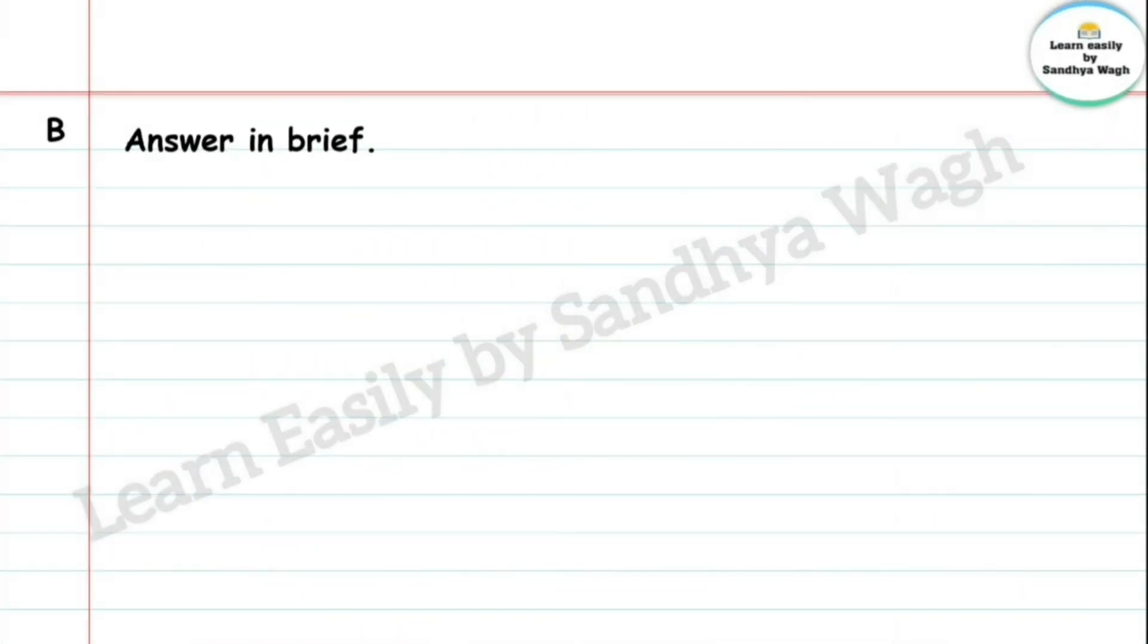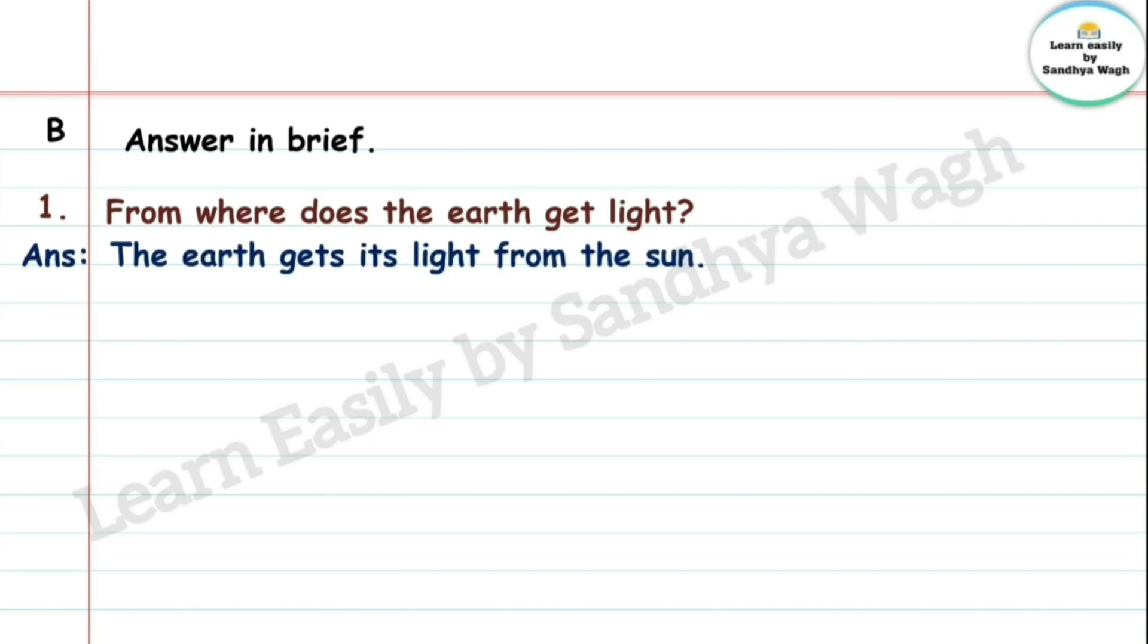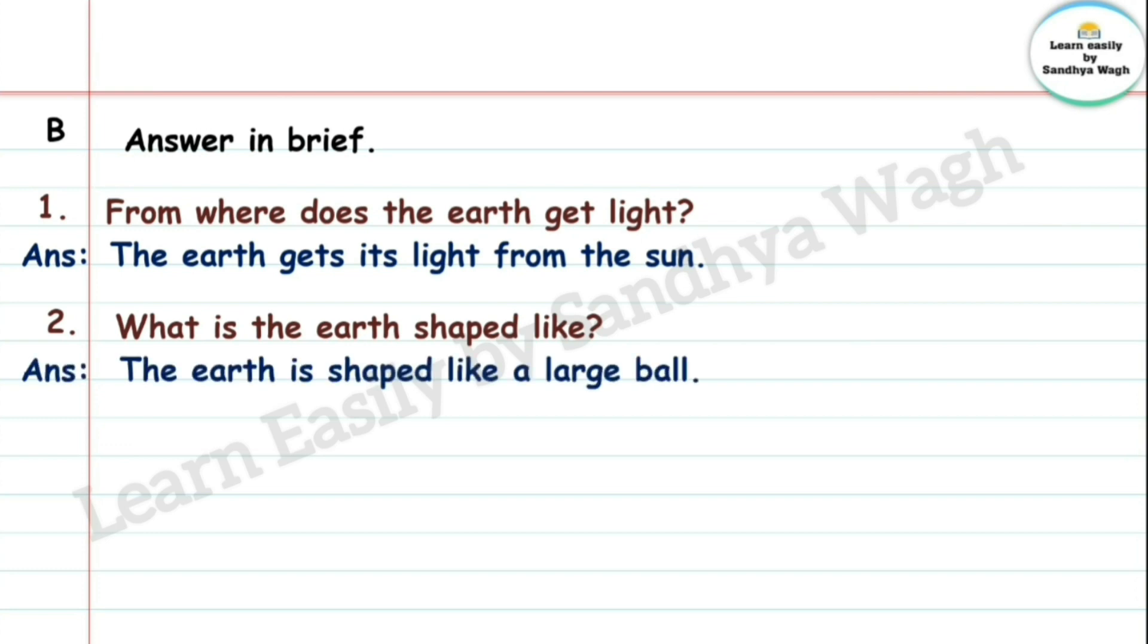B. Answer in brief. 1. From where does the earth get light? Earth word prakash kuthuneto. Answer: The earth gets its light from the sun. 2. What is the earth shaped like? Earth cha akar kasa ahe, shape kasa ahe? Answer: The earth is shaped like a large ball.